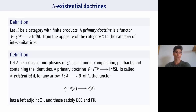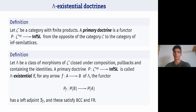I want to recall the notion of lambda-existential doctrine, which is a generalization of the ordinary notion of existential doctrine. We consider a class lambda of morphisms of the base category closed under pullback, compositions, and containing identities. A primary doctrine is called lambda-existential if for every arrow f of the class lambda, the functor given by re-indexing along f has a left adjoint satisfying the Beck-Chevalley condition and Frobenius reciprocity. This generalizes the ordinary existential doctrine: if lambda is the class of all projections, we obtain exactly the notion of existential doctrine.